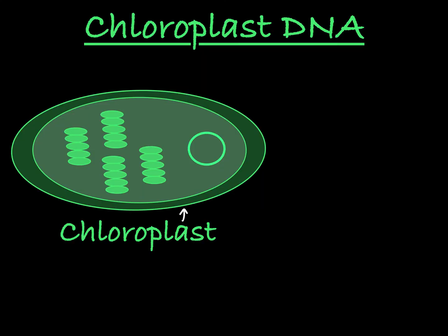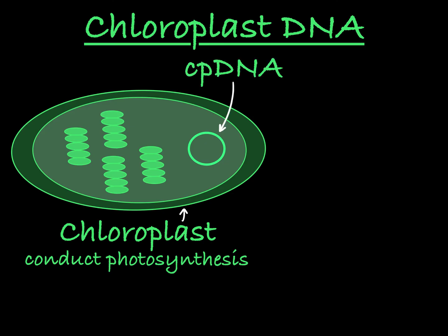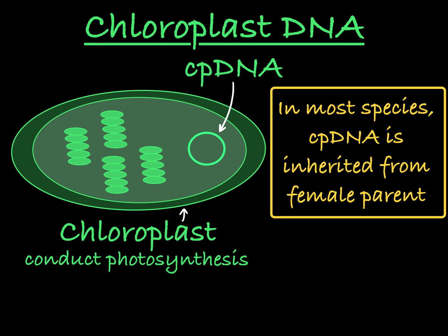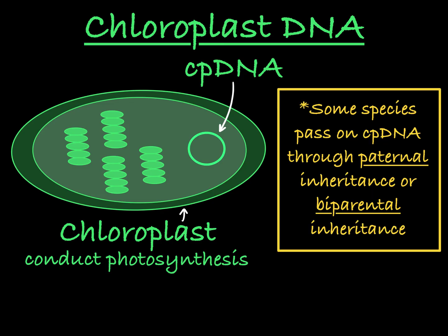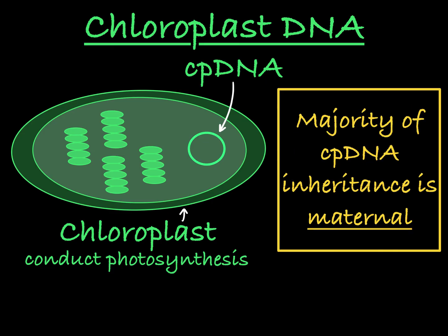The same phenomenon happens in chloroplasts, which you find in plants, algae, and some amoebas. Remember that chloroplasts are the organelle that conducts photosynthesis. Just like mitochondria, chloroplasts carry their own DNA — chloroplast DNA, which can be abbreviated cpDNA. In most species containing chloroplasts, you see maternal inheritance, where the female parent is the sole provider of chloroplasts and therefore chloroplast DNA to the offspring. However, in some species you see paternal inheritance, where the male parent is the sole provider of chloroplasts, or even biparental inheritance, meaning both male and female parents contribute chloroplasts to the offspring. But on the whole, the majority of chloroplast DNA inheritance is maternal.